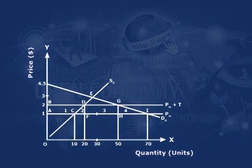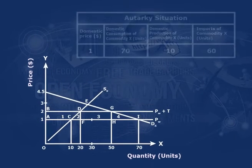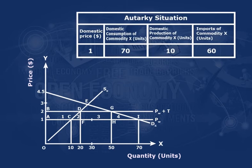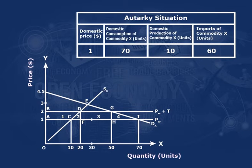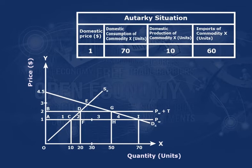According to the autarchy situation, when domestic price is $1, nation A produces 10X. The domestic demand for commodity X is 70X. The remaining 60X is imported.